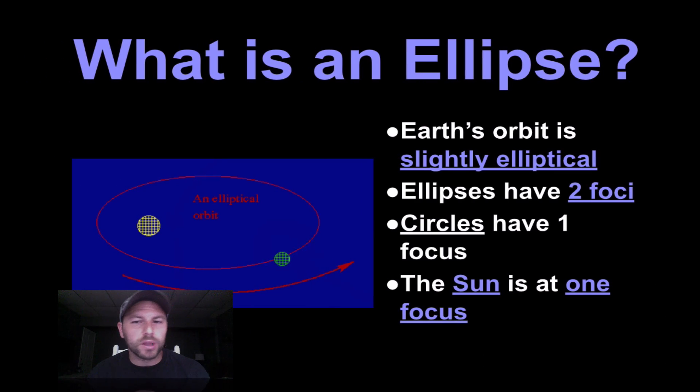So first off, we need to know what an ellipse is. An ellipse is basically a geometric shape that has two foci. A circle has one focus. So very similar, ellipses and circles. And the sun in our case is at one of the foci for our solar system. And take again this little image right here. I would get all these images down for Kepler's laws.